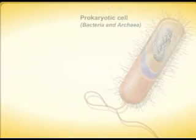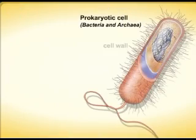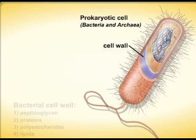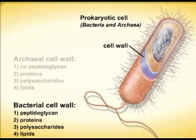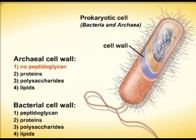Most bacteria and archaea have a cell wall. The bacterial cell wall contains peptidoglycan as well as proteins, polysaccharides, and lipids. The archaeal cell wall contains no peptidoglycan but does contain proteins, polysaccharides, and lipids.